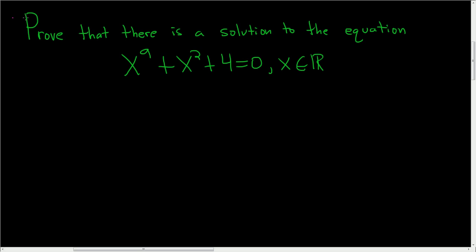Prove that there is a solution to the equation x to the 9th plus x squared plus 4 equals 0, for x in R. In this video, we're going to use the Intermediate Value Theorem to prove this.